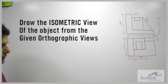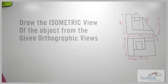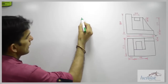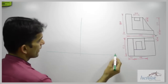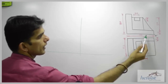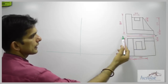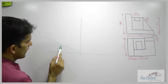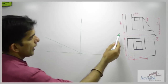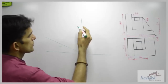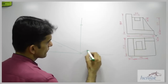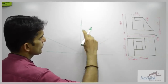Draw the isometric view of the given views. First we will draw a box. The origin is over here, 100 is on the left side, so we will draw 100 on the left side. Height is 70, so we will take height 70, and width is 65, so we will take it on this side.